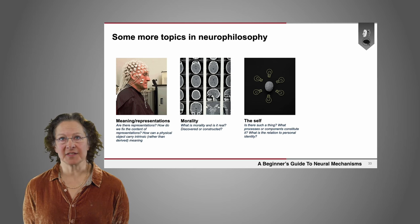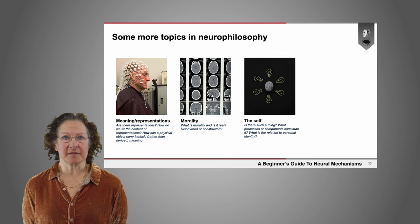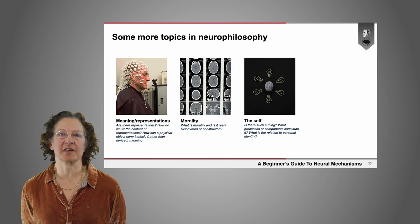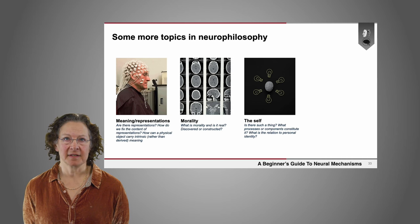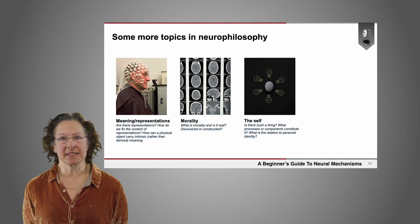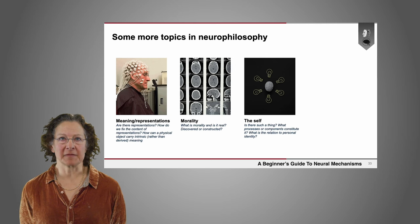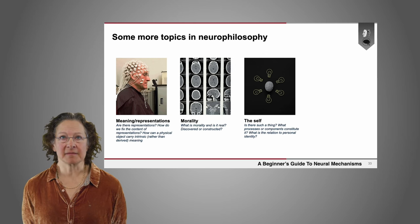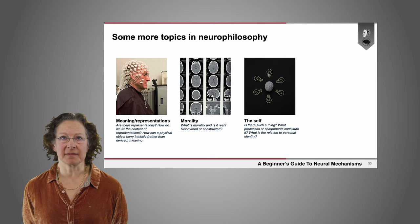Another similar question is the nature of the self. Is there such a thing? What are the processes or components that constitute it if there is? What is the relation of the self to personal identity? Those are questions that philosophers have thought about for millennia, but they might take on a different look when we incorporate the findings from brain science.